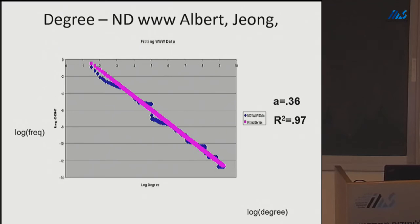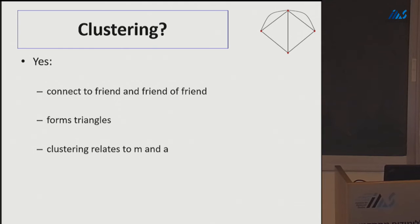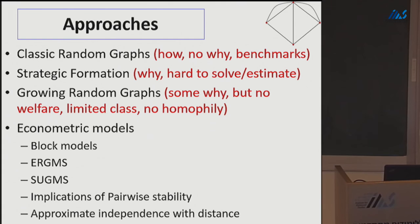To summarize: classic random graphs provide useful benchmarks for things like short paths but don't explain why we see those patterns. Strategic formation explains the 'why' through costs and benefits but is hard to solve and estimate. Growing random graphs give partial 'why' answers—perhaps through network search—and now we can fit degree distributions. There's still a long way to go, but this class of models is a step toward empirically workable network formation models.